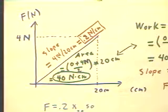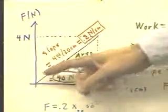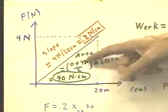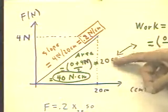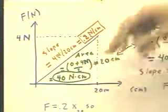We can also calculate the area. It might be a little hard to read, but the area is the average of the two altitudes, 0 here and 4 newtons here. So we've got 0 plus 4 newtons divided by 2 multiplied by the 20 centimeters, and that comes out to 40 newton-centimeters.